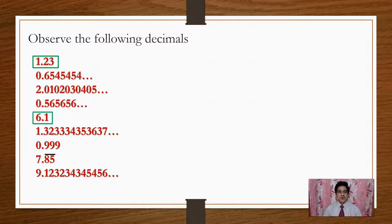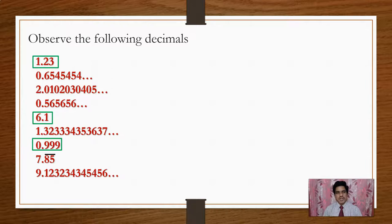Numbers like 1.23, 6.1, and 0.999 are Terminating Decimals — they are simple decimals with no recurring part.